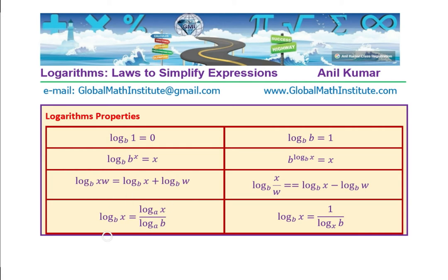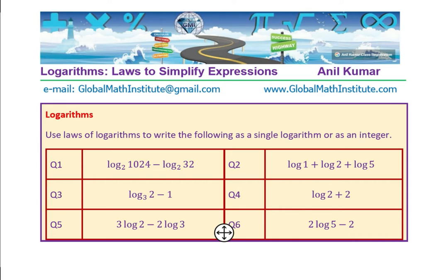Here is change of base. You could always change the base from b to anything — let's say a. Log base b of x is log base a of x over log base a of b. If you change the base from b to x, you get log base x of x, which is 1 in the numerator, and log base x of b in the denominator — a kind of reciprocal identity. These are the basic logarithmic properties needed to solve these questions.